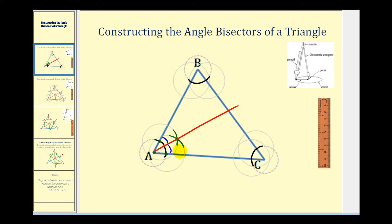Now we'll do the same at vertex B. We'll put the point of the compass at this intersection point and swing an arc in the interior of the angle. Then move the point of the compass over to this point of intersection and swing another arc in the interior of the angle. The angle bisector will pass through this point of intersection and vertex B, and again these two smaller angles are congruent and half the measure of angle B.